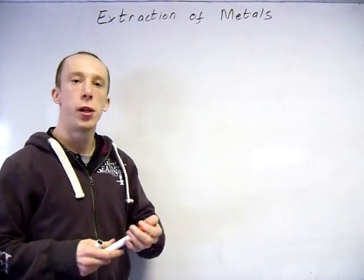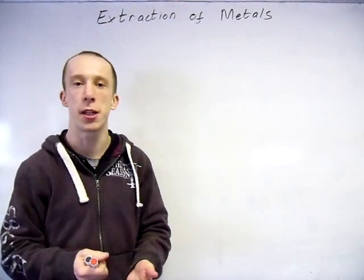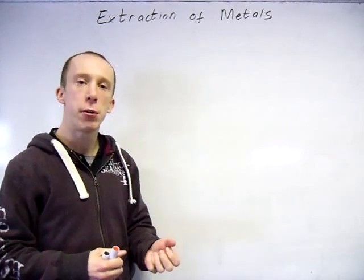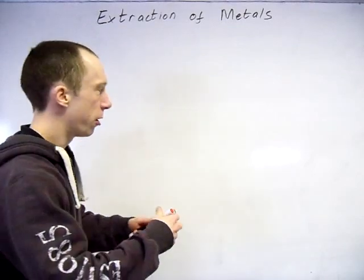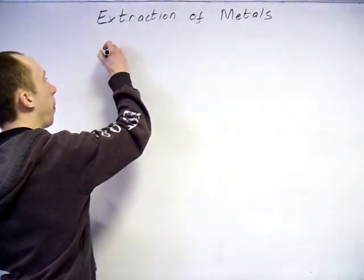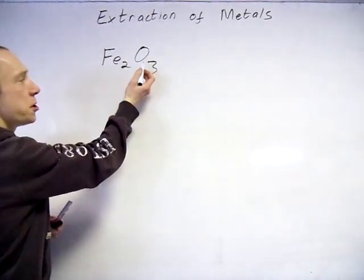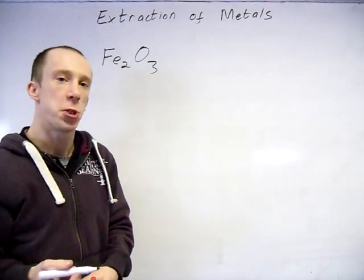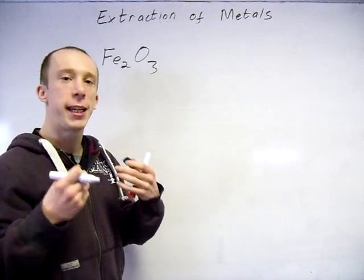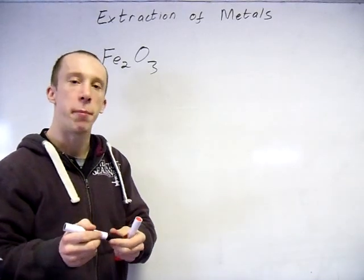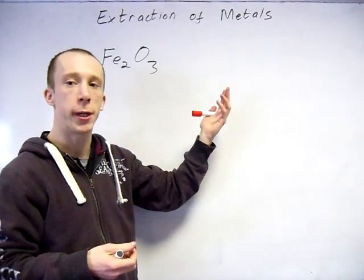Now once you've got your actual metal oxide then you need to decide what reducing agent you're going to use to actually extract the metal from it. So everything you use to react with this will be a reducing agent because the metal, since the oxygen is more electronegative, the metal is going to have a positive oxidation number, i.e. a positive charge. So we need to give it electrons to turn it back into its element state. Hence everything which reacts with it will be a reducing agent.